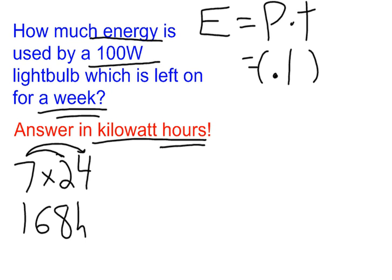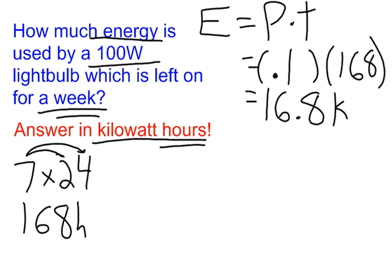Now we can plug that in. So 0.1 times 168, or one-tenth of 168, is 16.8 kilowatt hours. And that's our answer.